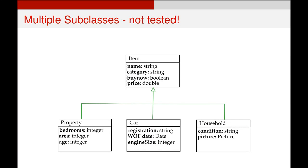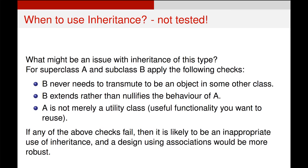You can also have multiple subclasses — you don't just have to have one. For items, it would make a lot of sense to have subclasses like a property subclass, a car subclass, or a household subclass, where you have similar kinds of items that require specific behavior. You can get them all to inherit some basic item properties but then branch out into their own unique classes.